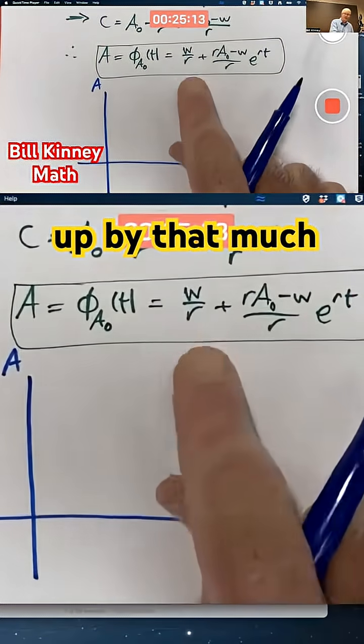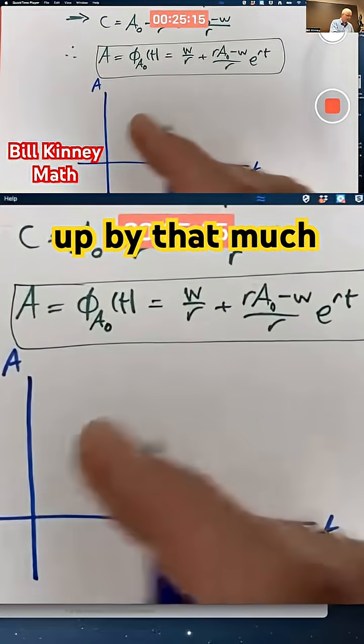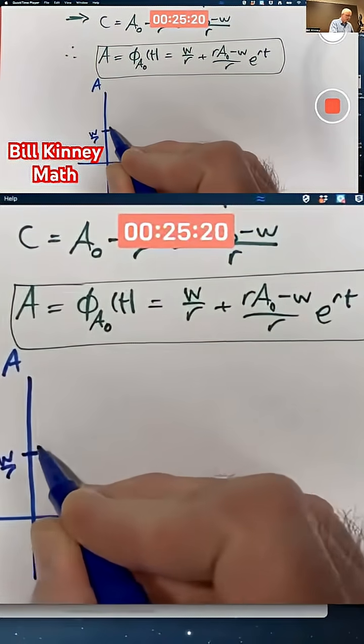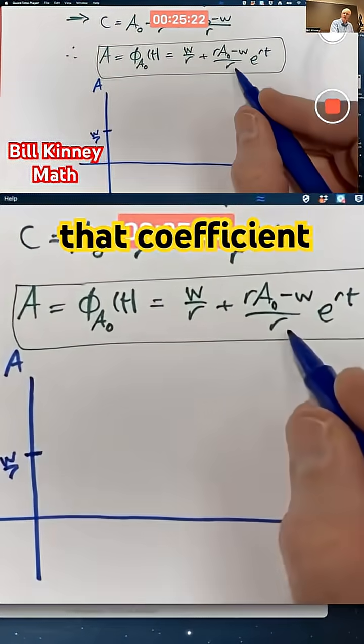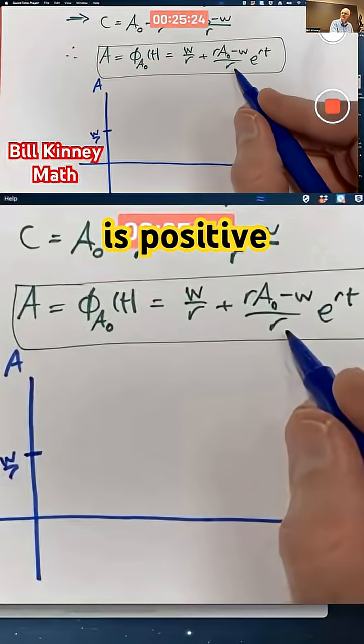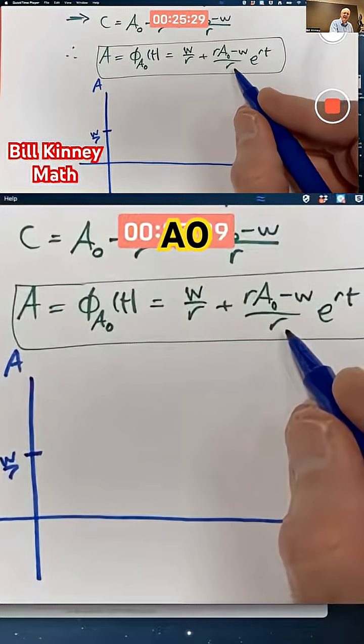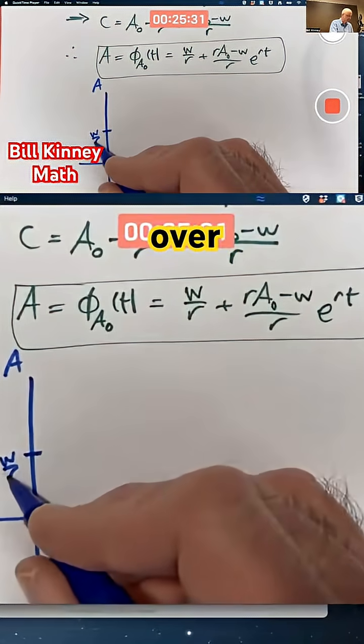Shift it up by that much. If this is w over r, and that coefficient there is positive, which it will be if a naught is bigger than w over r.